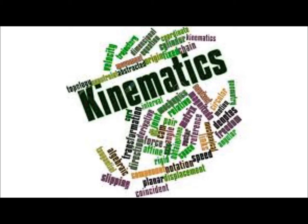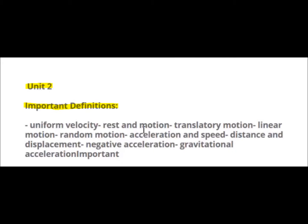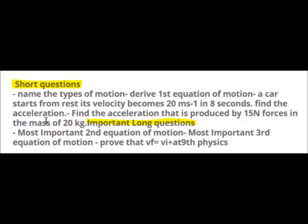Definitions: uniform velocity, rest and motion, translatory motion, linear motion, random motion, acceleration and speed, distance and displacement, negative acceleration, and gravitational acceleration. These are important definitions. Let's look at short questions. Name the type of motion, derive first equation of motion.